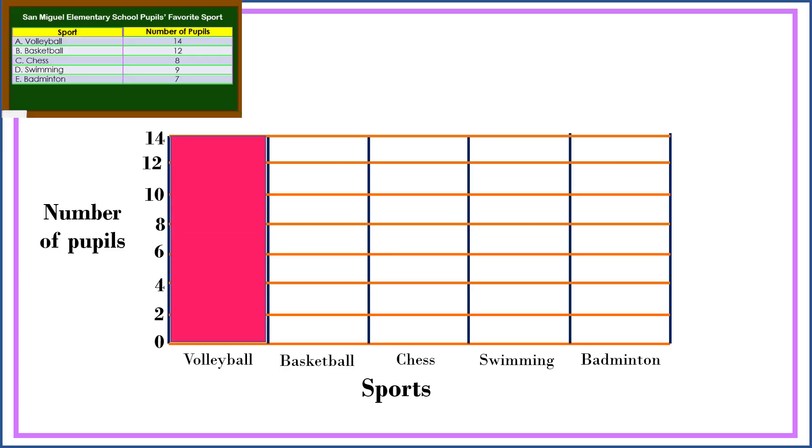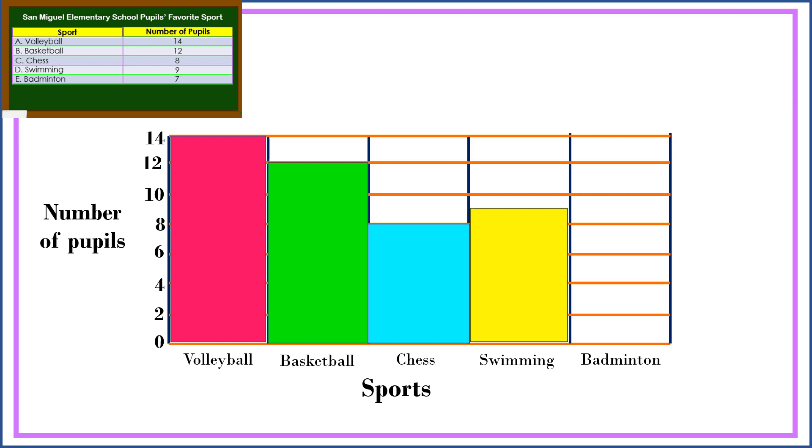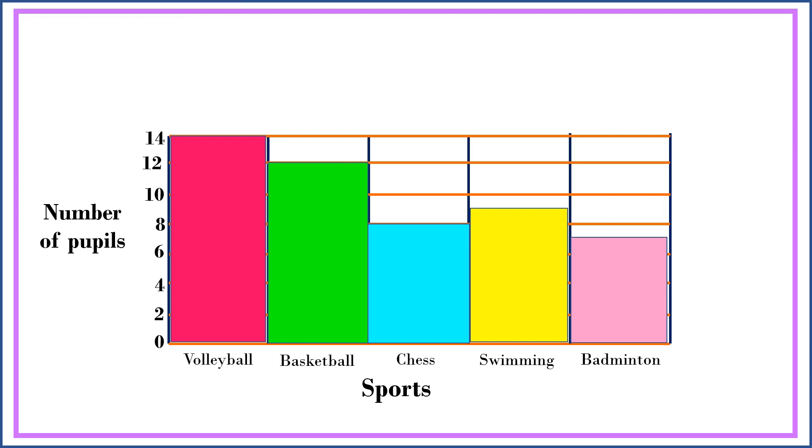We have volleyball is 14, basketball is 12, chess is 8, swimming is 9. So 9 is in between 8 and 10. And badminton is 7. 7 is in between 6 and 8. And don't forget to write the title for the graph.